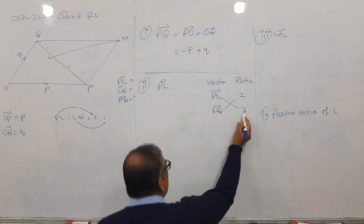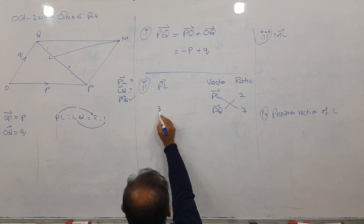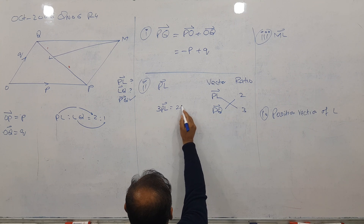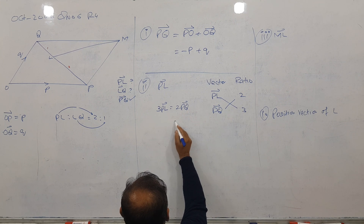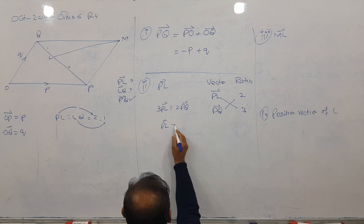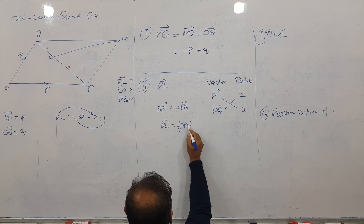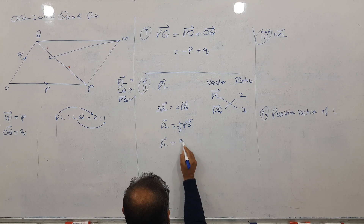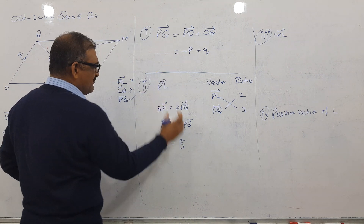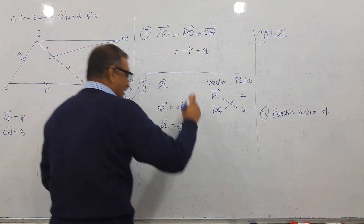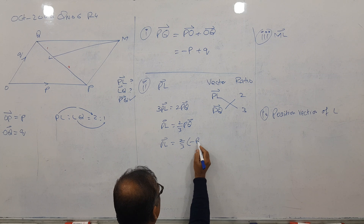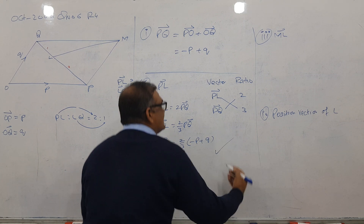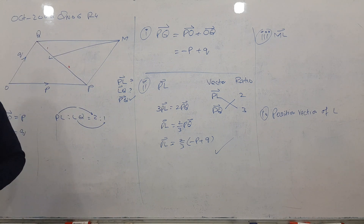Now I cross multiply: 3 times PL equals 2 times PQ. So 3 goes to the denominator and we get PL equals (2/3) PQ. Since PQ equals minus P plus Q (from earlier), the answer for PL is (2/3)(minus P plus Q).